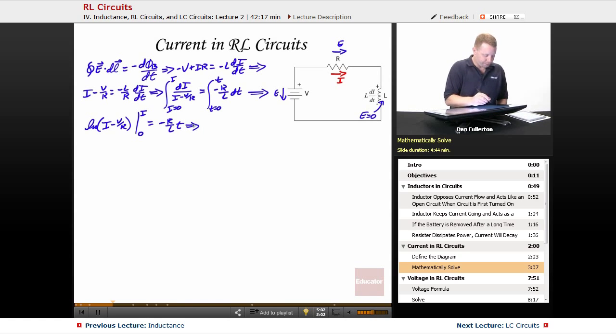And the right hand side of course just becomes minus R over L t. Alright expanding out this left hand side substituting in our limits, that implies then that the log of (I minus V/R) minus the log of (minus V/R) must be equal to minus R over L times T.